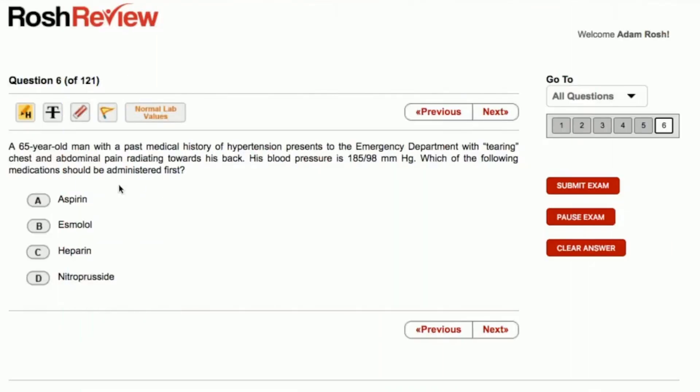We have a 65-year-old man with a past medical history of hypertension who presents to the emergency department with tearing chest pain and abdominal pain radiating towards his back. His blood pressure is 185 over 98. Which of the following medications should be administered first?